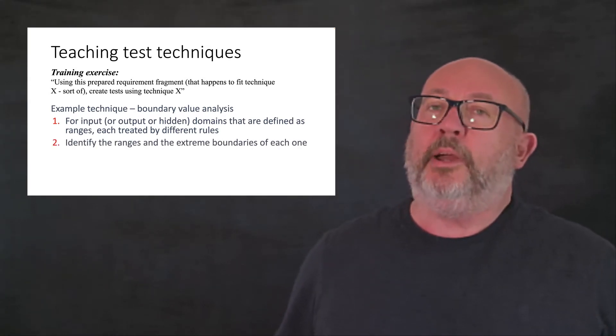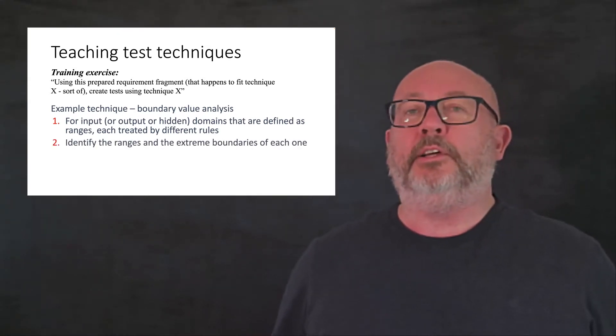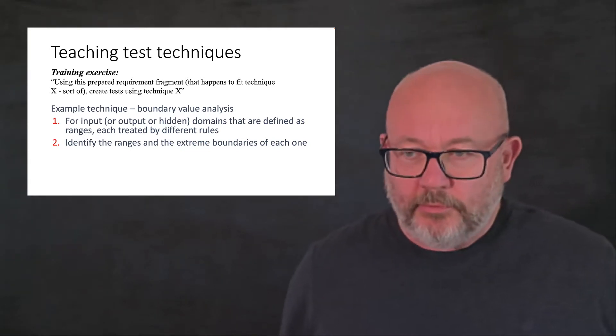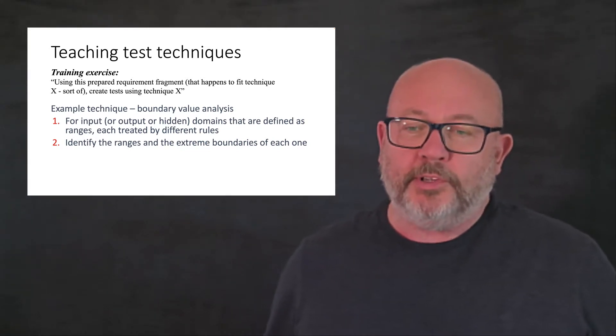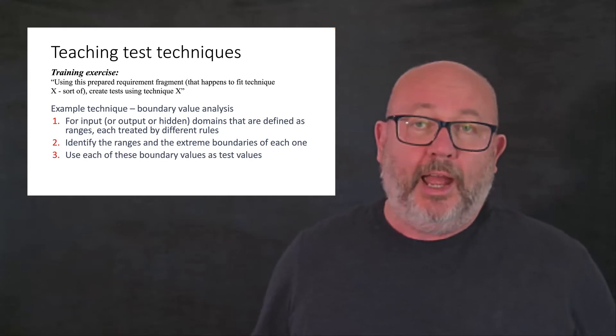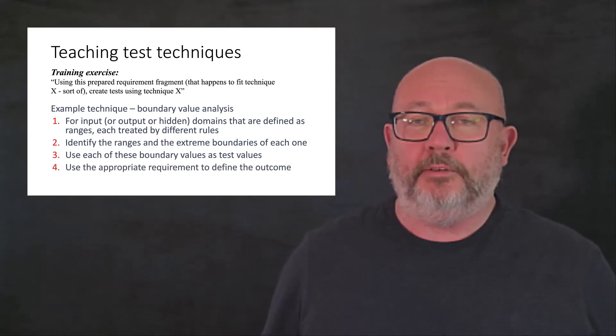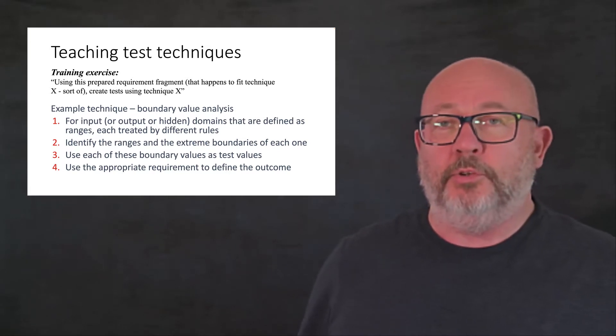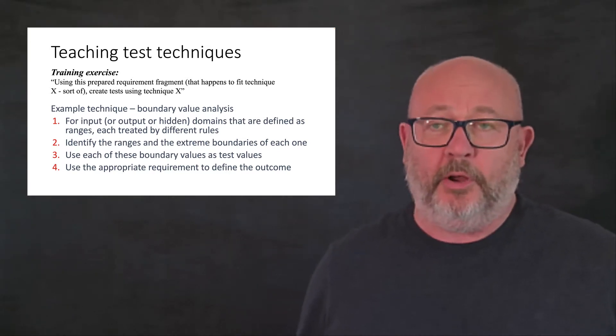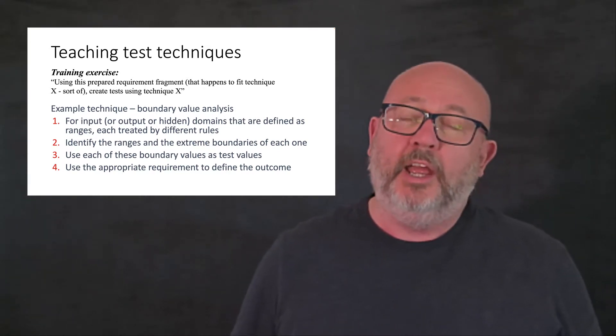So what we do is we identify the ranges first, and we look at the extreme boundaries of each range, and then use those extreme boundaries as values, as test values. And we use the appropriate requirement that we're working on to calculate an outcome from the test that uses those boundary values.